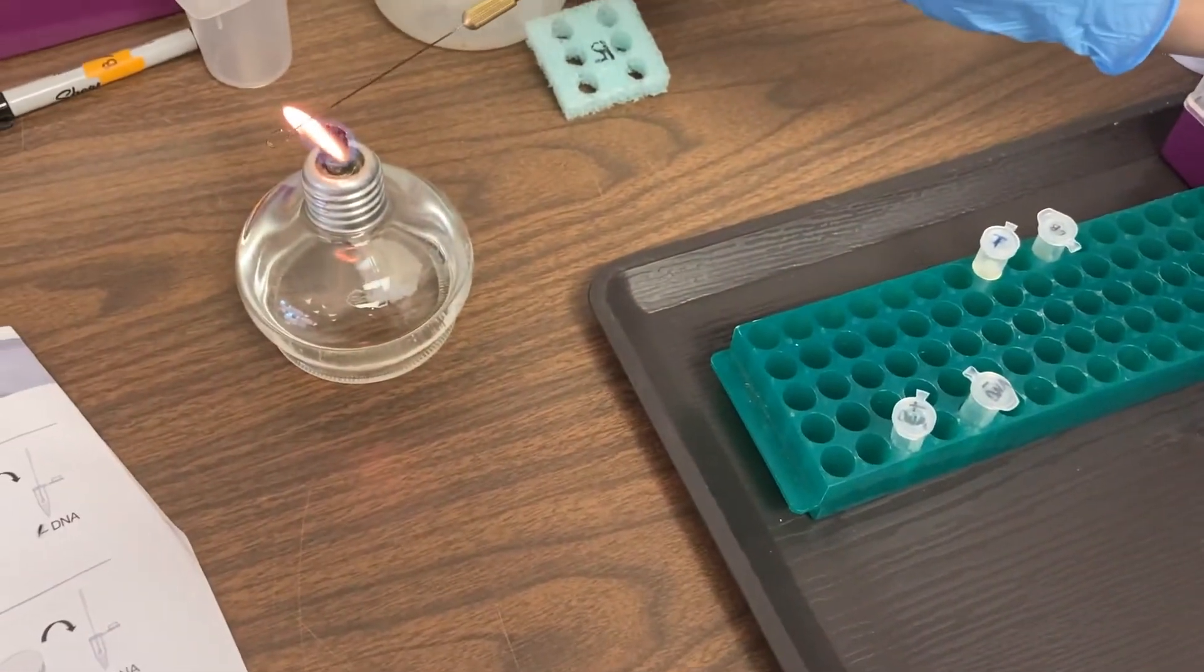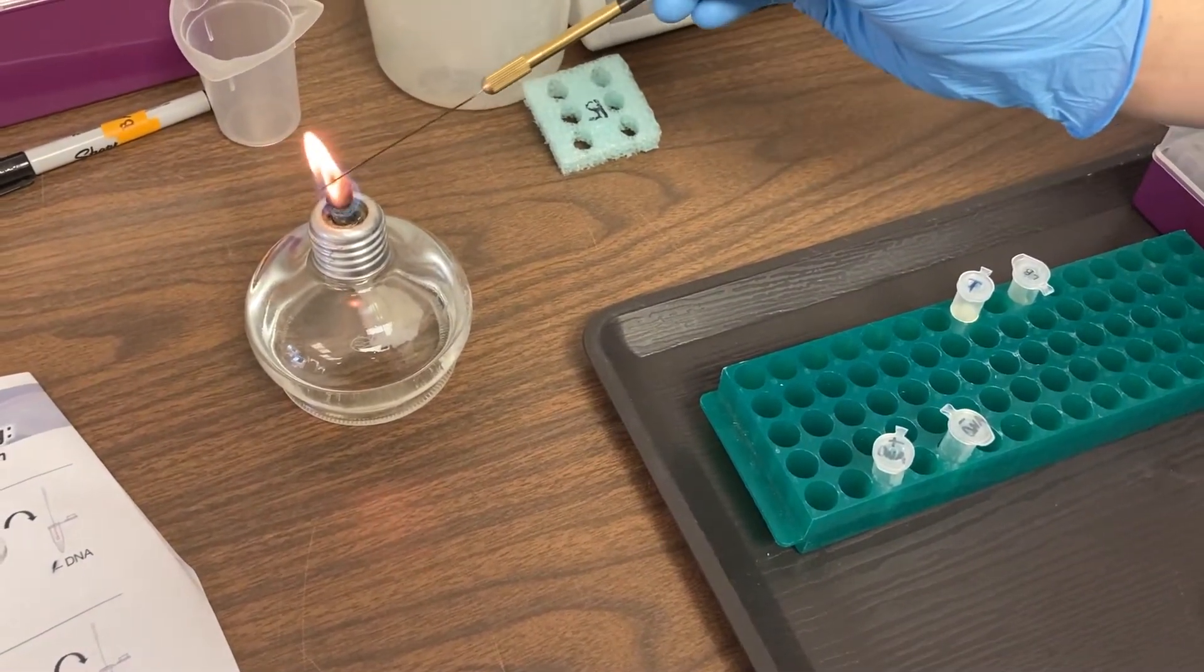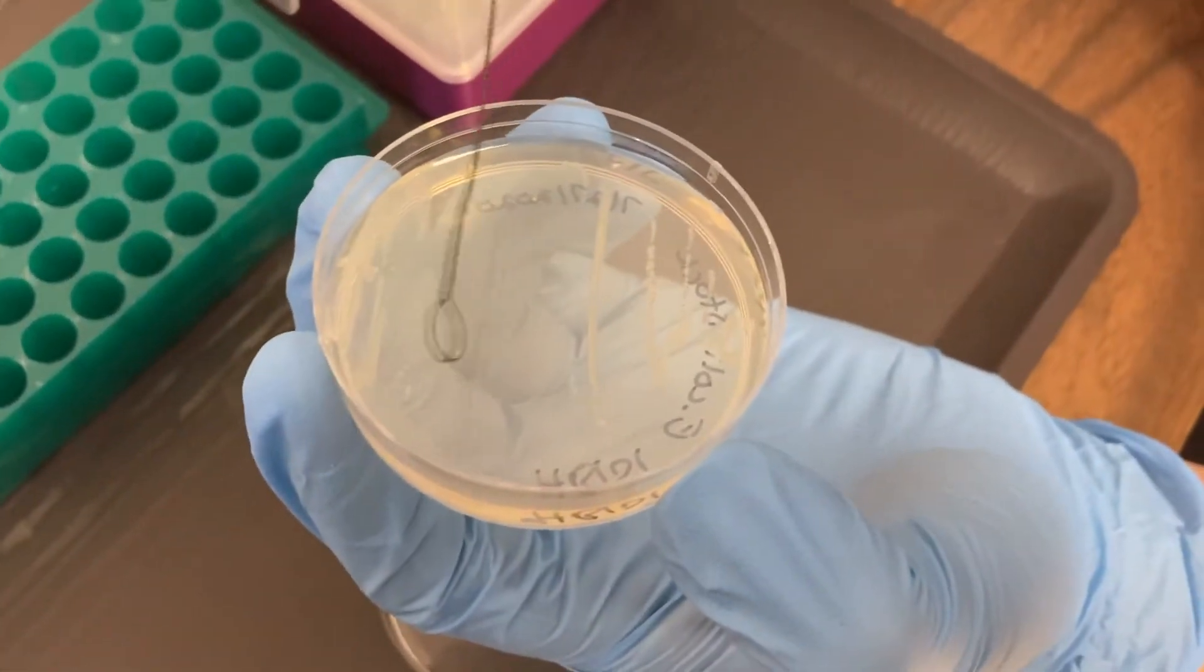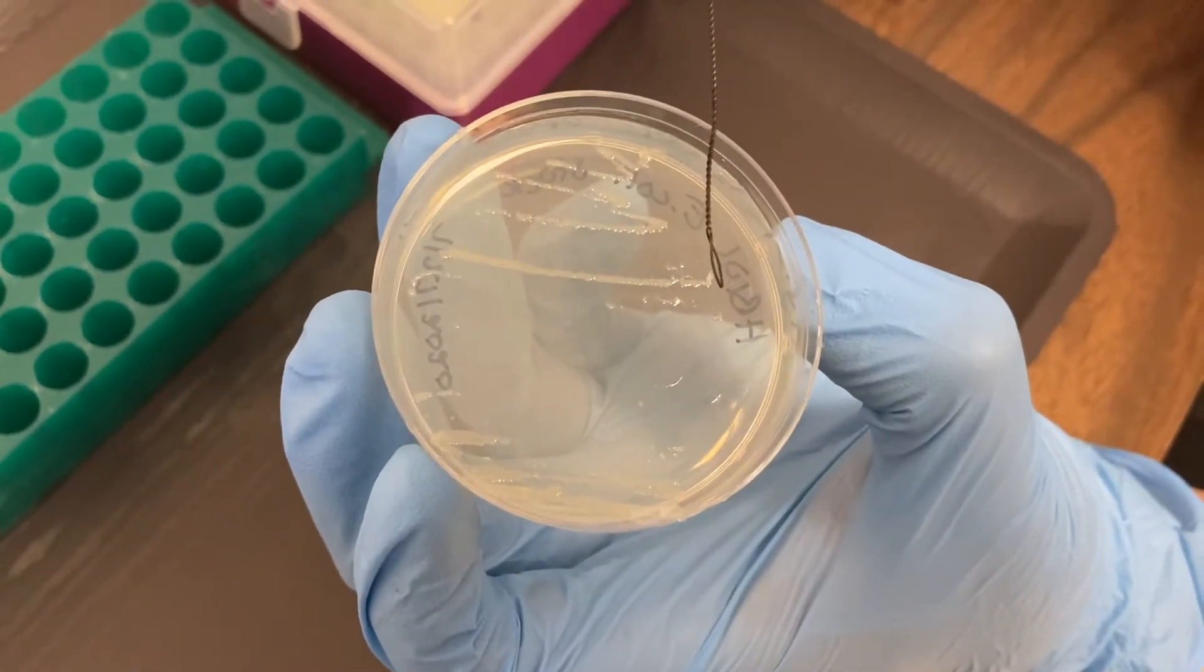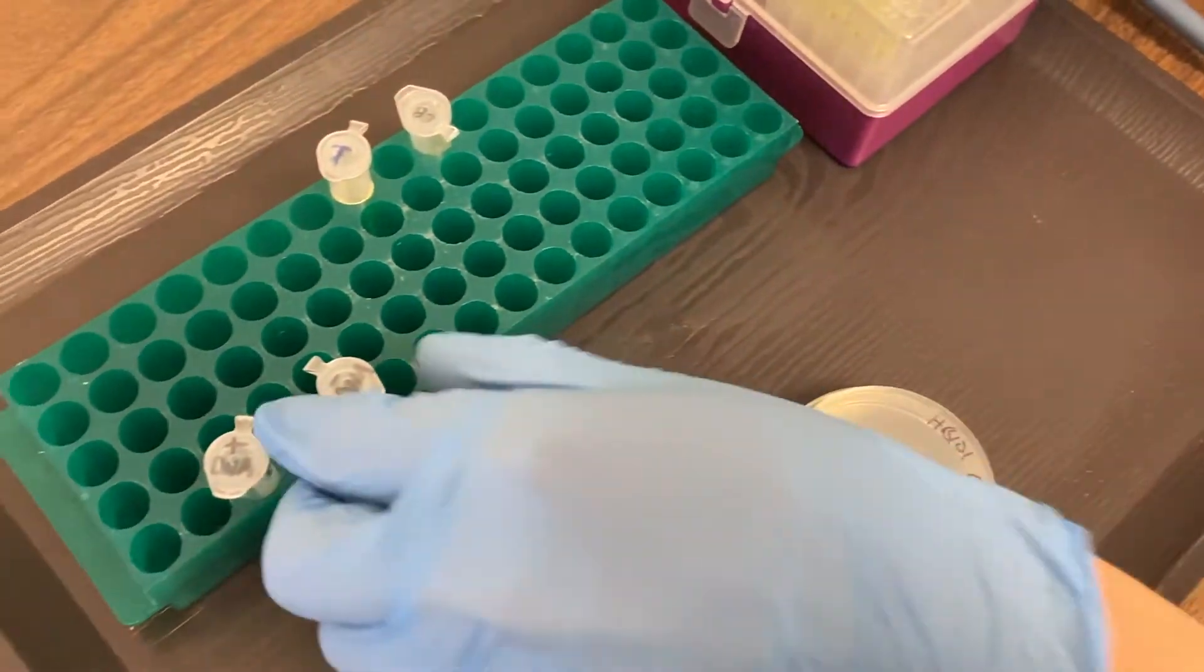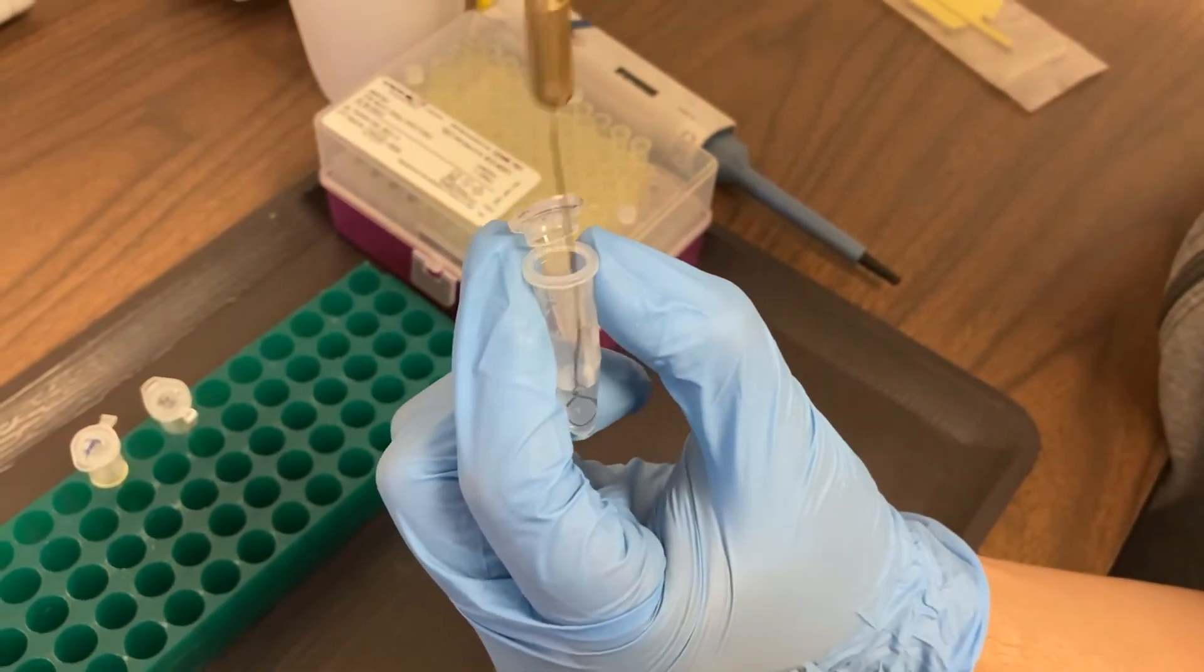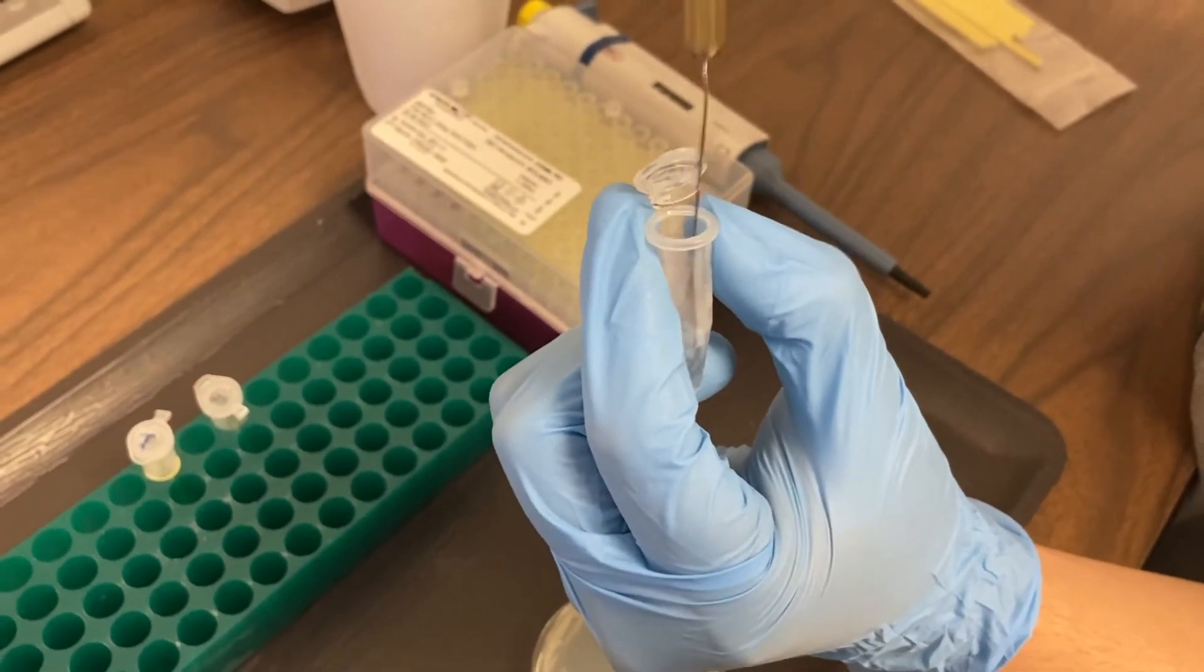Next we'll use our lab burner to clean our loop. You may use plastic inoculating loops in your classroom, in which case you'd use individual ones. So we're going back to our stock E. coli bacteria, swipe across the top without digging into that agar. We're going to put this in the tube labeled minus DNA. Again, stab and twizzle the loop to make sure that the bacteria gets off into that calcium chloride.